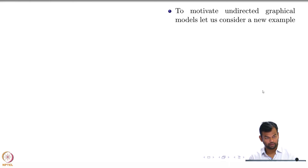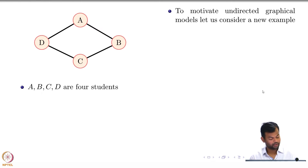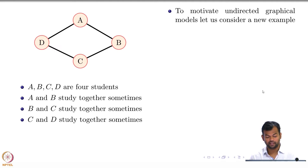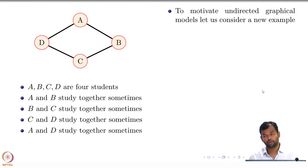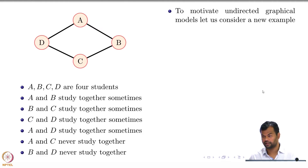We have dealt with the student example before; now we look at a different set of students. Suppose I have four students: A, B, C, D. A and B study together sometimes; A, B, and C study together sometimes; and so on. Every edge indicates whether two students study together or not. For now, I am not drawing directions on these edges. If you do not see an edge, it means those students never study together. So A and C do not study together, and B and D do not study together.